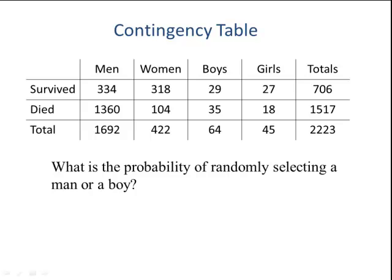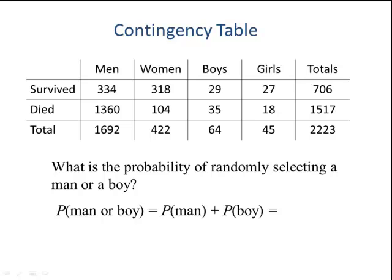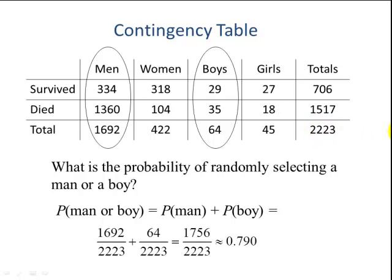What is the probability of randomly selecting a man or a boy? As we learned in section 5.2, when we have an OR, we use the addition rule. Since these are mutually exclusive — they are disjoint — we simply add the two probabilities: probability of a man plus probability of a boy. That's 1,692 out of 2,223 plus 64 out of 2,223, giving us 1,756 out of 2,223, which is about 79%.